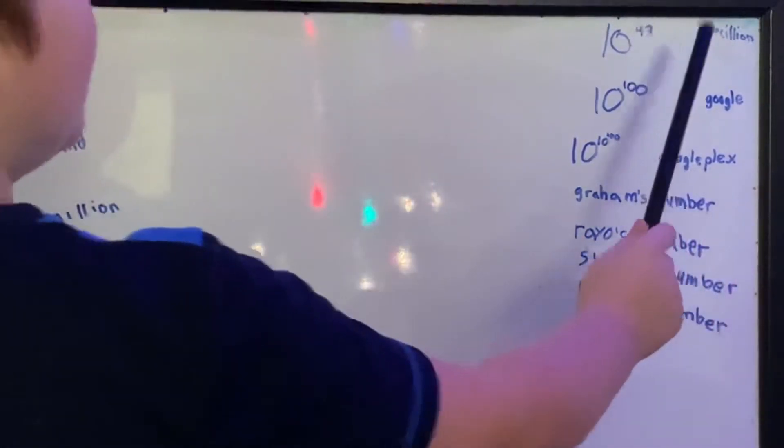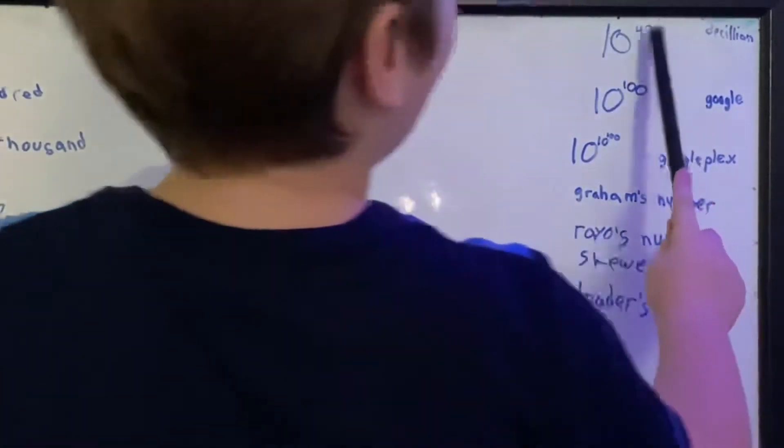In decillion, we would have to write 1 with 43 zeros.